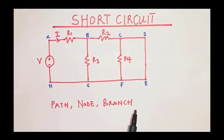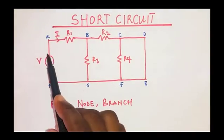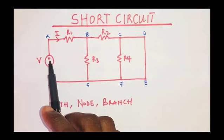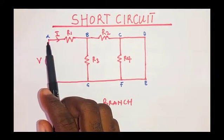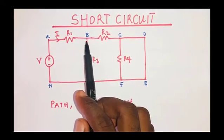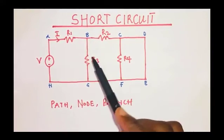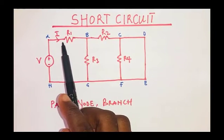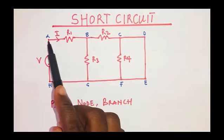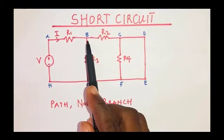A path refers to a connection where we have current flowing. Consider this circuit with a voltage source Vin and resistors. The voltage source drives current from the positive terminal through resistor R1, approaching junction B. At junction B the current divides — part flows through R3 and the rest through R2. The connection where current flows refers to the path.